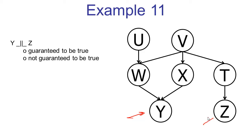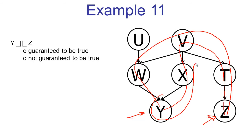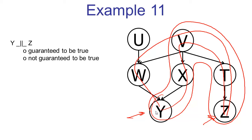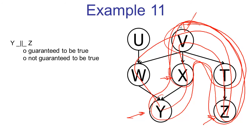Now we're asked about y and z with no evidence. There are two paths connecting y and z. Let's look at the first path, which consists of the triples y, x, v; x, v, t; and v, t, z. The triple y, x, v is a causal chain with the middle node unobserved — active. The next triple, x, v, t, is a common cause with the middle node unobserved — active. The last triple, v, t, z, is a causal chain with the middle node t unobserved — also active. All triples along this path are active, which means we have an active path. Once we find an active path, we cannot guarantee the independence.